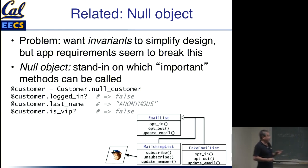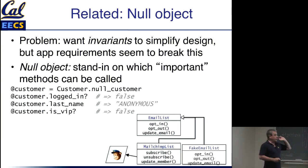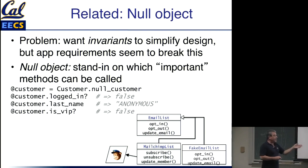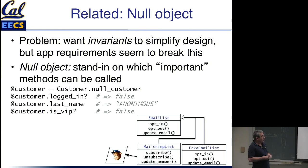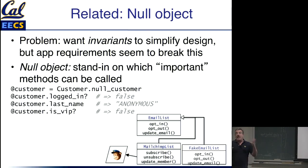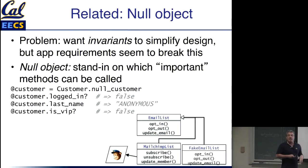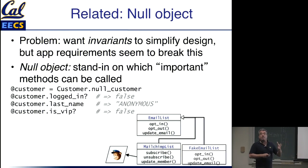The null object pattern is great for this. In fact, one place I'm refactoring to use it is in the email marketing list example. Some customers don't use any external marketing service, so I can create a 'fake email list' class — a subclass of email list — that overrides all methods. If you tell it to opt a customer in, it silently does nothing. If you ask how many people are on the fake email list, it always says zero. It behaves in all respects like a real email list, but it's effectively been stubbed out.